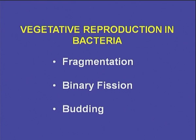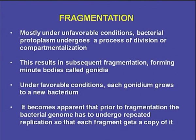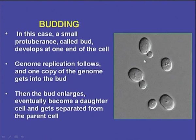We now come to vegetative reproduction in bacteria. Vegetative reproduction occurs through fragmentation, budding, and binary fission. In fragmentation, mostly under unfavorable conditions, bacterial protoplasm undergoes a process of division or compartmentalization, resulting in subsequent fragmentation forming minute bodies called gonidia. Under favorable conditions each gonidium grows into a new bacterium. Prior to fragmentation the bacterial genome undergoes repeated replication so that each fragment receives a copy of it.